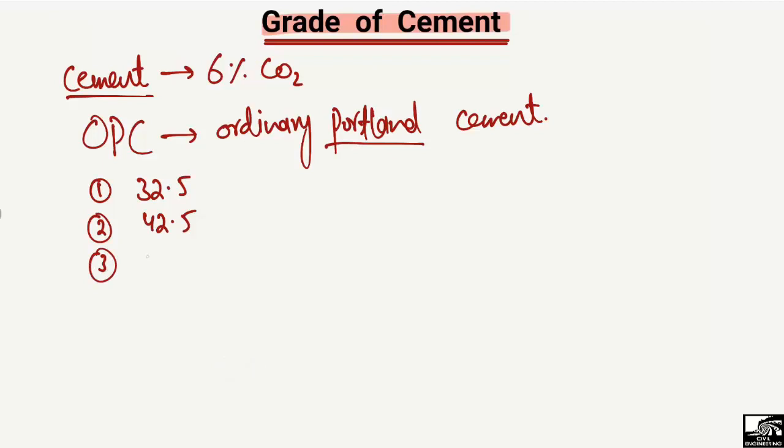And third is the 52.5 grade of cement. So we have three different grades of cement. Each grade of cement is used for its own purposes. What does 32.5 mean?